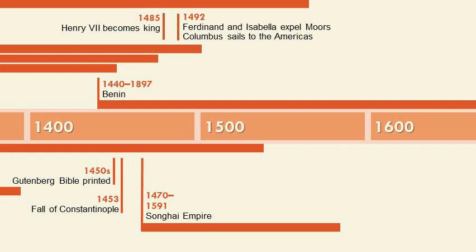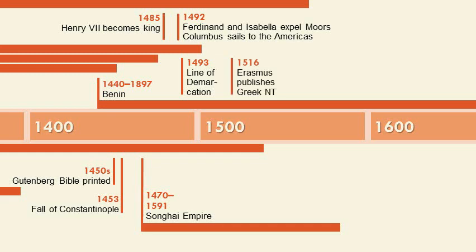Ferdinand and Isabella of course, and the expansion of the west into the Americas through Columbus's journey and the whole age of exploration happening during this time period. Erasmus publishes the Greek New Testament — that'll be very instrumental in the growth of the Reformation and the whole notion of ad fontes, going back to the ancient authors themselves rather than how they were interpreted by the medievalists and the scholastics. The 95 Theses is when we officially note the beginning of the Reformation, when Martin Luther nailed his 95 Theses to the door of the Wittenberg church.